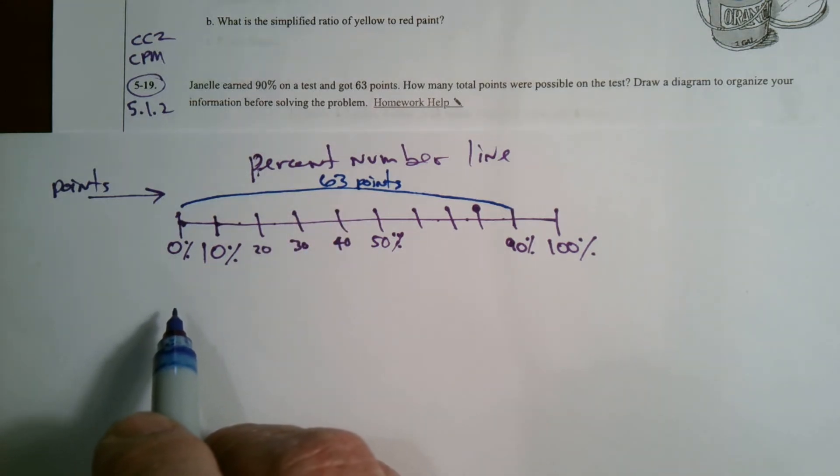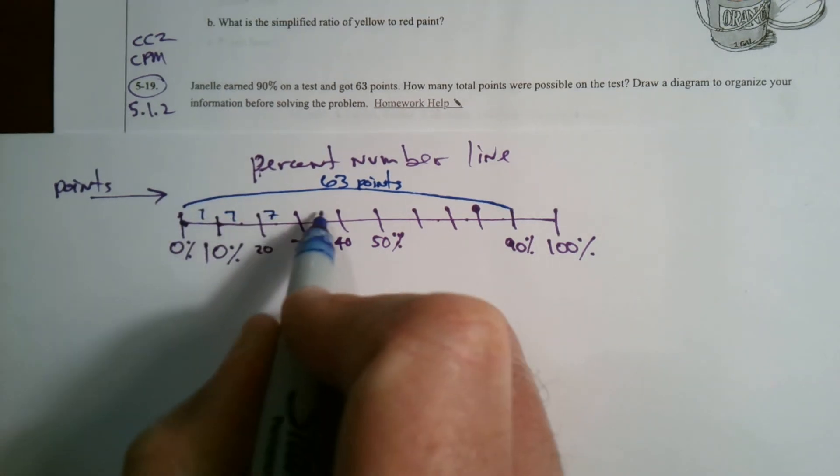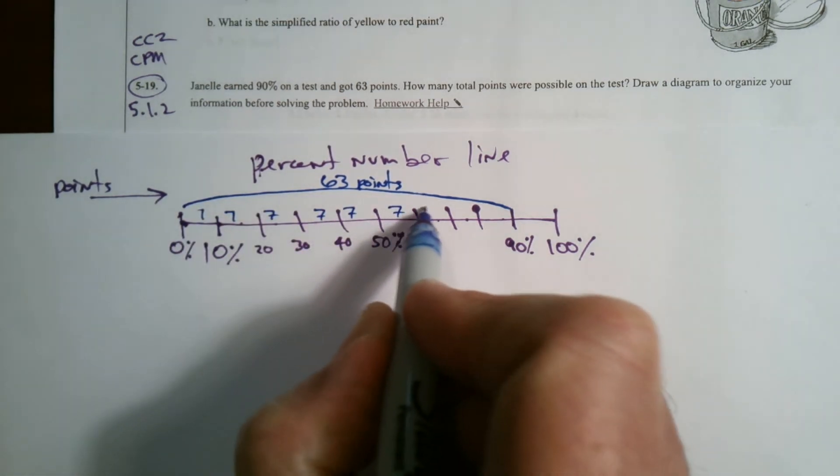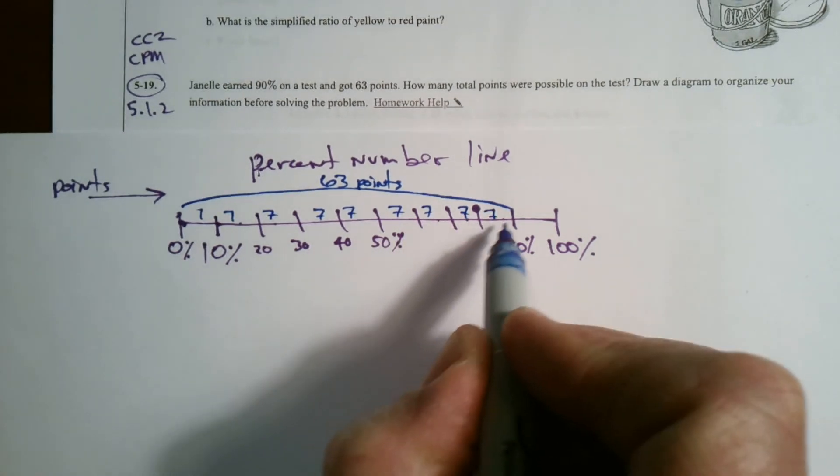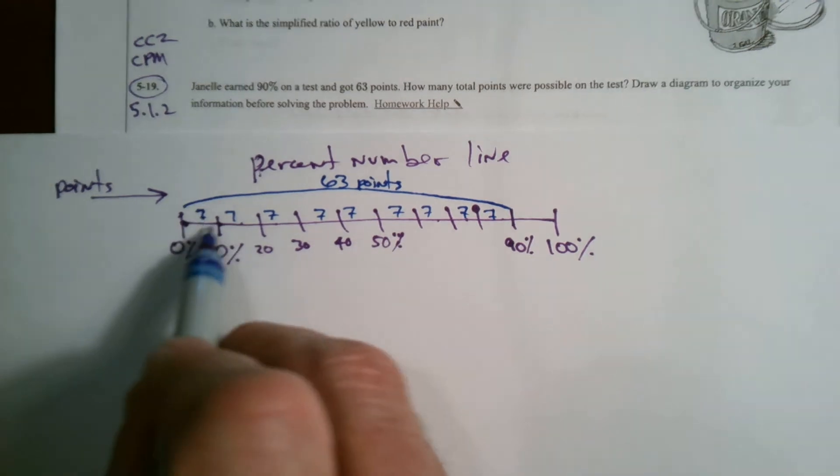Sure does. Goes in there seven times. So this is seven, seven, seven. Each of these spaces represent seven, right? All the way up because there's nine times seven, 63.